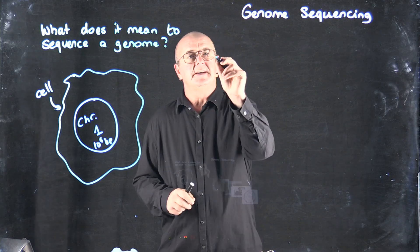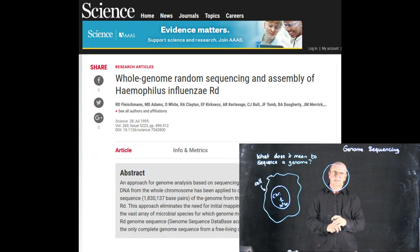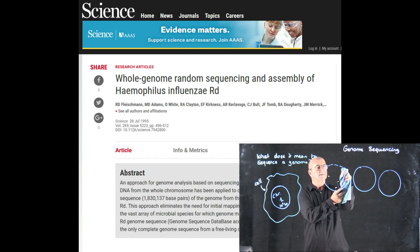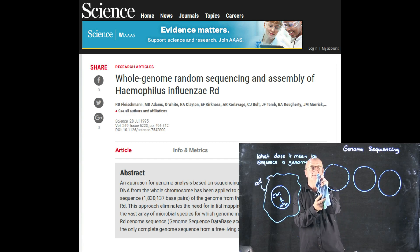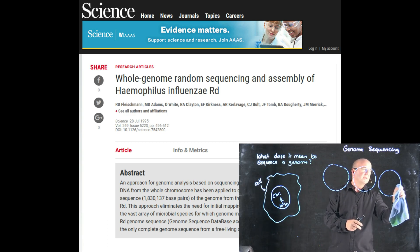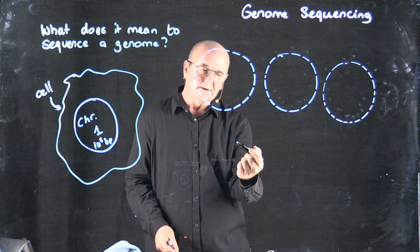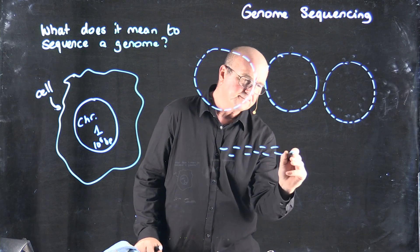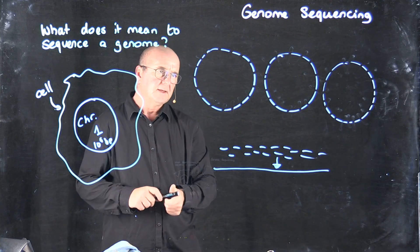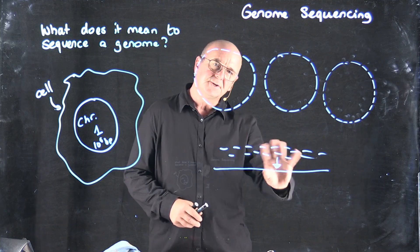Instead of taking that circle and trying to break it into pieces and focusing on each piece, why don't we take that circle — and lots of copies of the circle — break those into very small pieces, let's say a hundred to 500 base pairs long, and do it at random, then sequence all of those fragments. Because we've got lots of copies of the genome and lots of little fragments, our goal is to take those little fragments and convert them into one single long piece of DNA. Because each fragment starts at random, if we do this enough times we should be able to put it all back together.